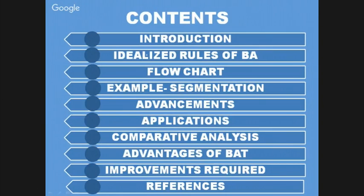A flowchart will give you the step-by-step introduction, every parameter including how the matching is done, the comparison is made, and how we get the optimized solution. Then, applying it on digital image processing using an example of segmentation involving multi-level thresholding. Advancements will also be discussed — as BAT is a very new algorithm launched in 2010, many more theoretical advancements are also available.